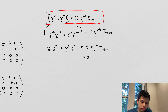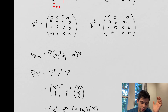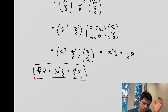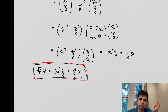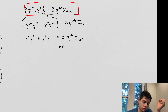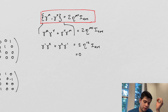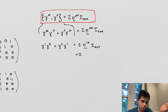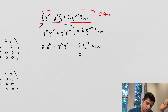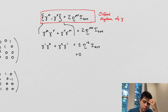So very briefly: we have defined what the inner product is between a spinor and its complex conjugate, and we have shown that the gamma matrices obey this interesting Clifford algebra property.